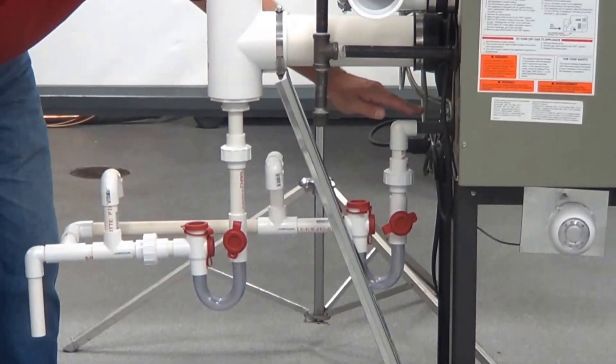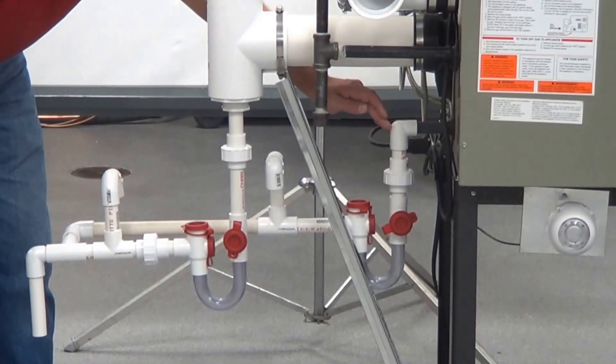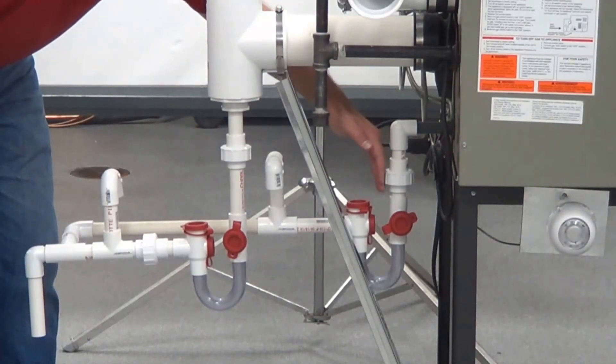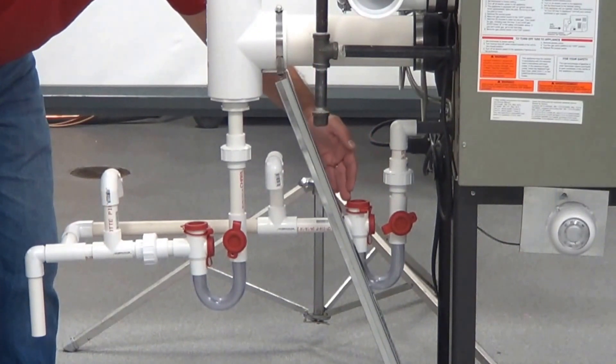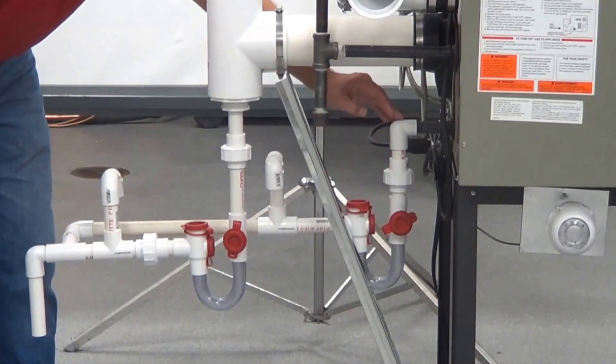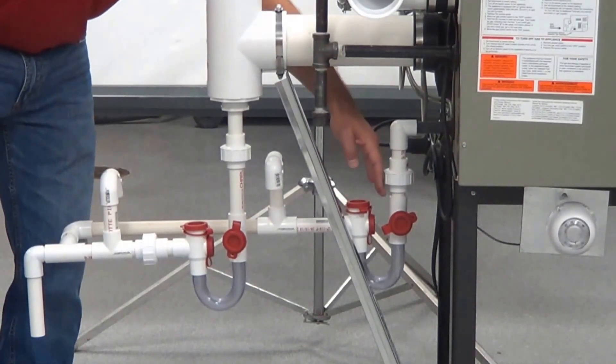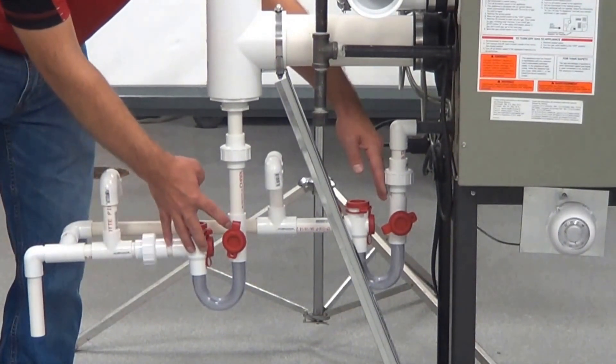And you'll see as we come out of the unit, we are making a 90 degree and we are heading down and installing our traps. We need to make sure that we have a good enough drop differential, which these traps give us.